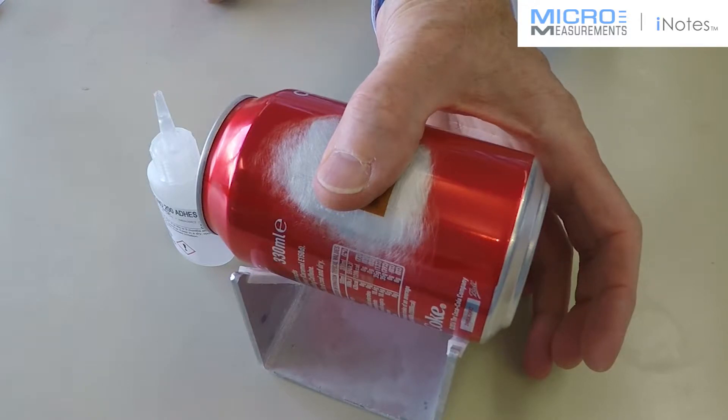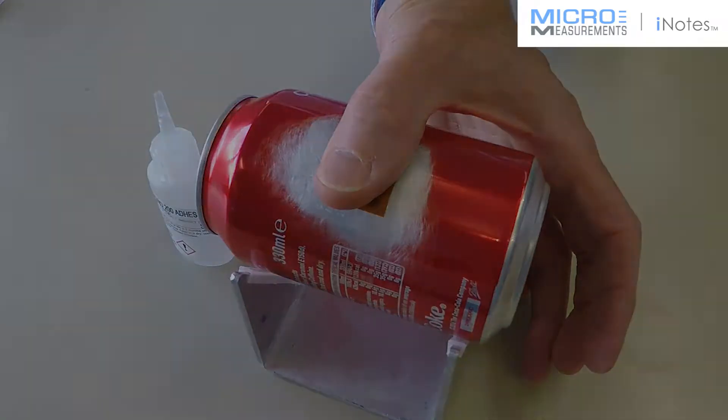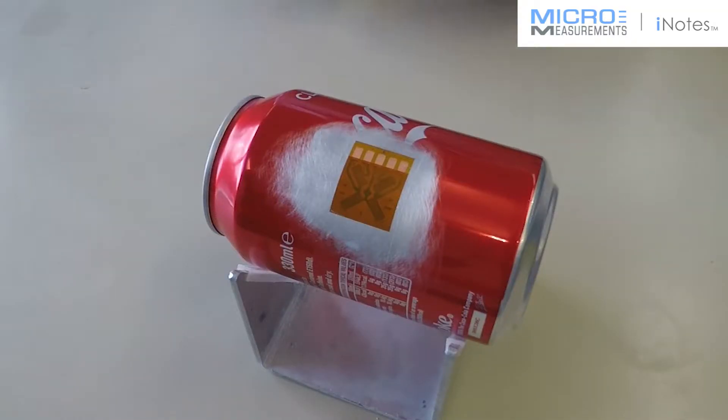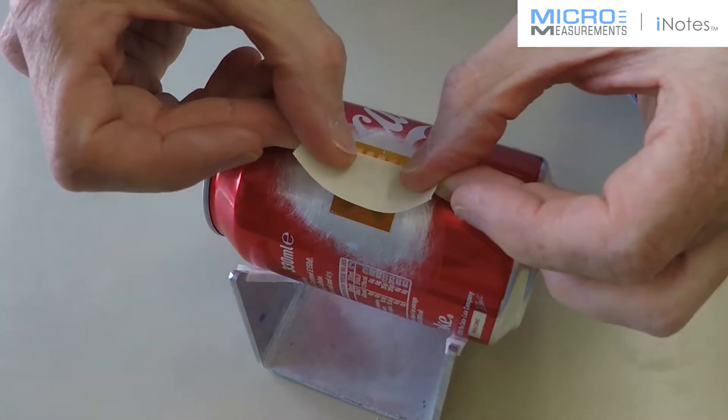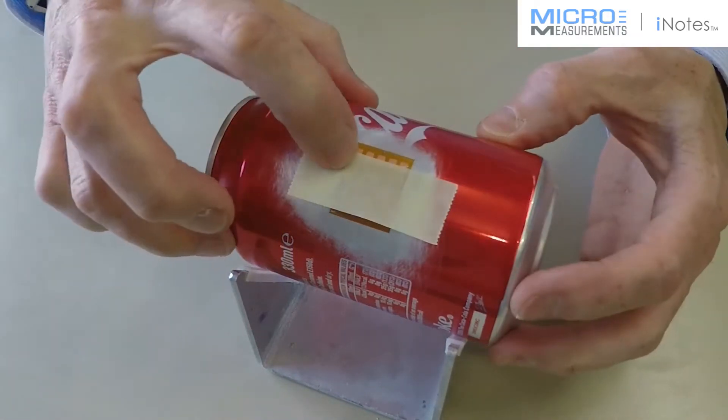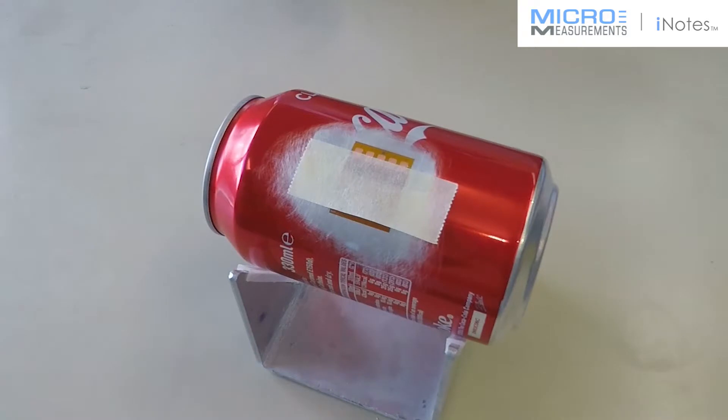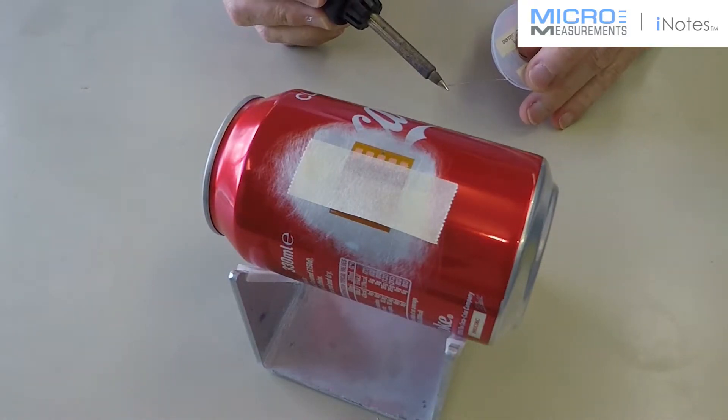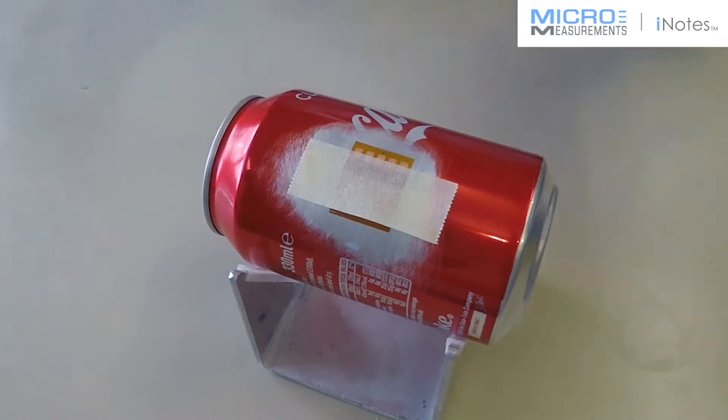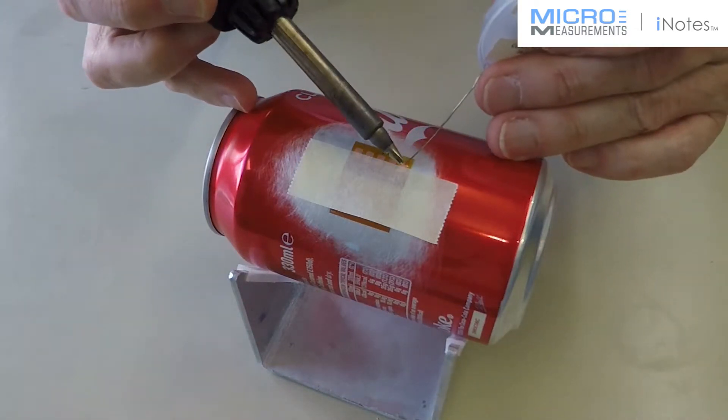And then put my thumb on the gauge and allow it to cure. I'm going to hold my thumb for one minute and then leave it a little longer. So now bonding is complete and I've removed the gauge handling tape. I'm going to attach the lead wires.